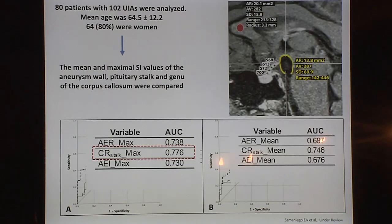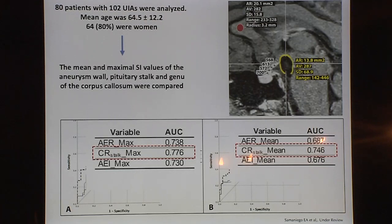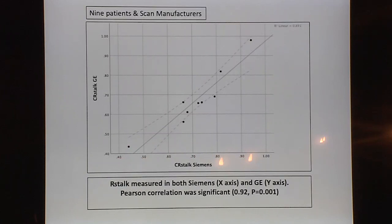Using aneurysm size as a landmark to determine instability, the pituitary stalk appears to be the best way to measure enhancement. There is also another upcoming paper on aspirin data, where we used the pituitary stalk to normalize enhancement of ruptured aneurysms, showing that aspirin decreases the enhancement — that is also coming out in the Journal of Neurosurgery.